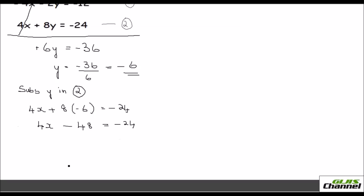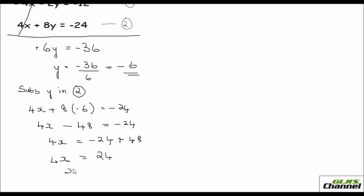Adding 48 to both sides: 4x equals minus 24 plus 48, which is 24. So x equals 24 over 4, which is positive 6.